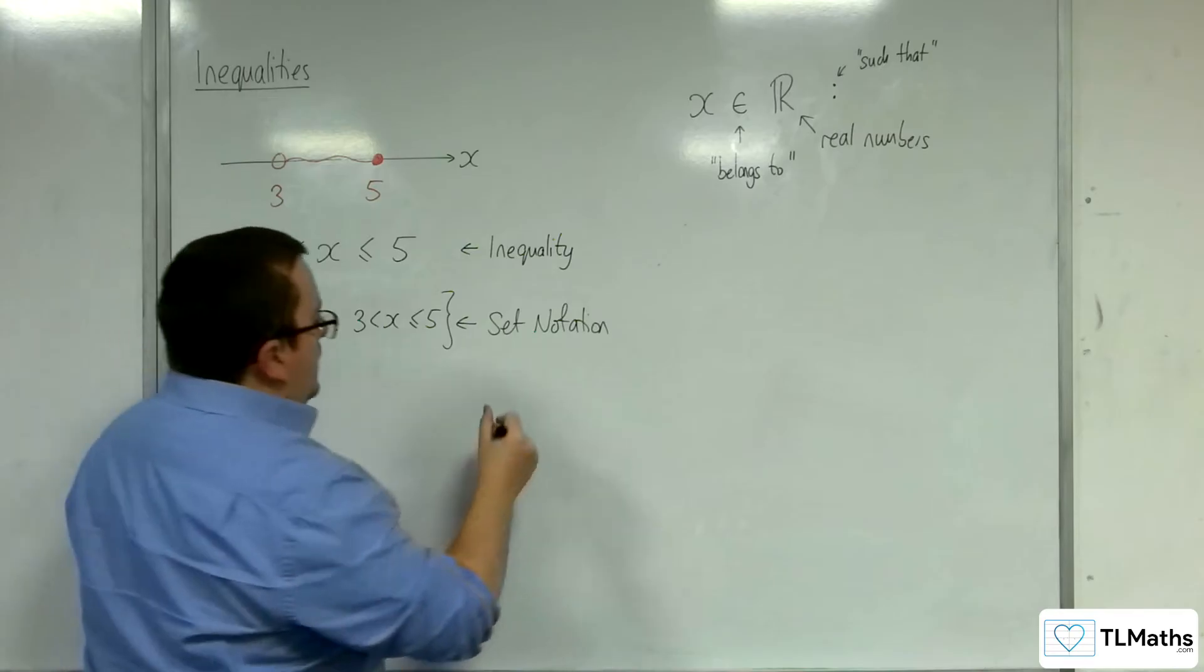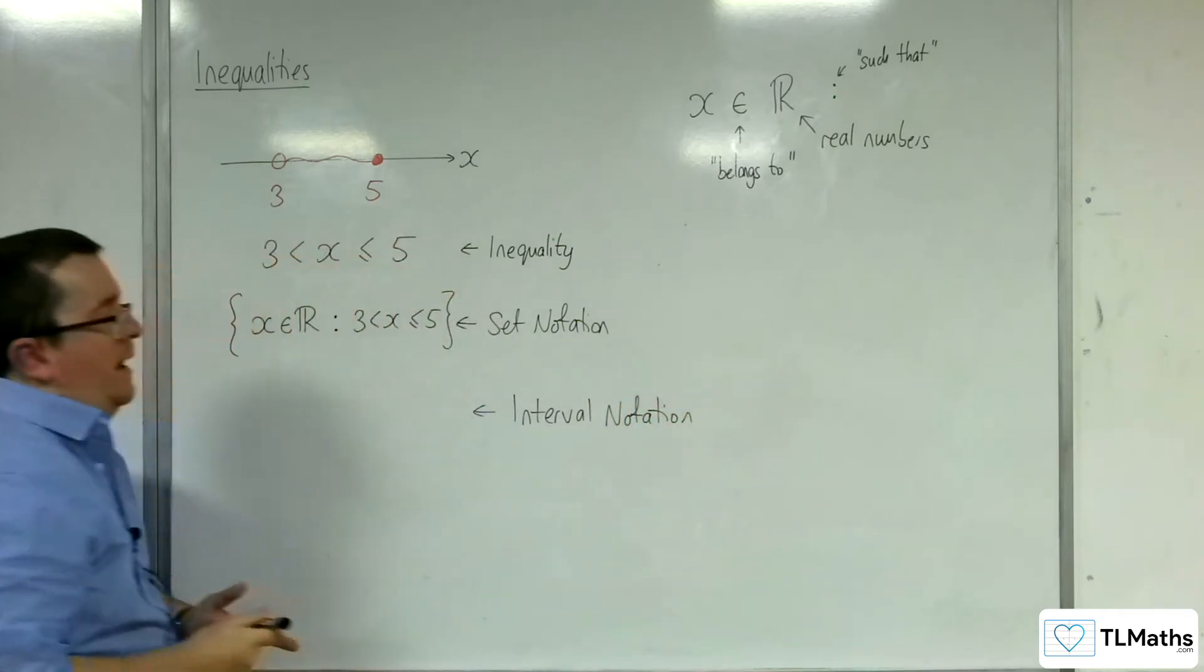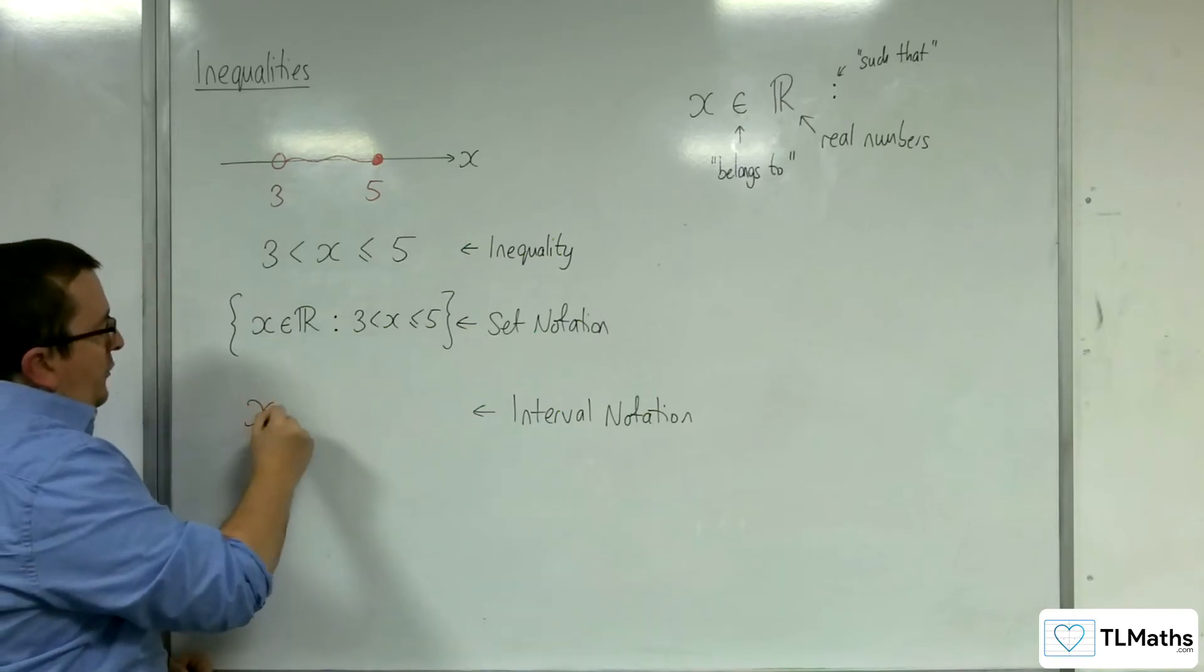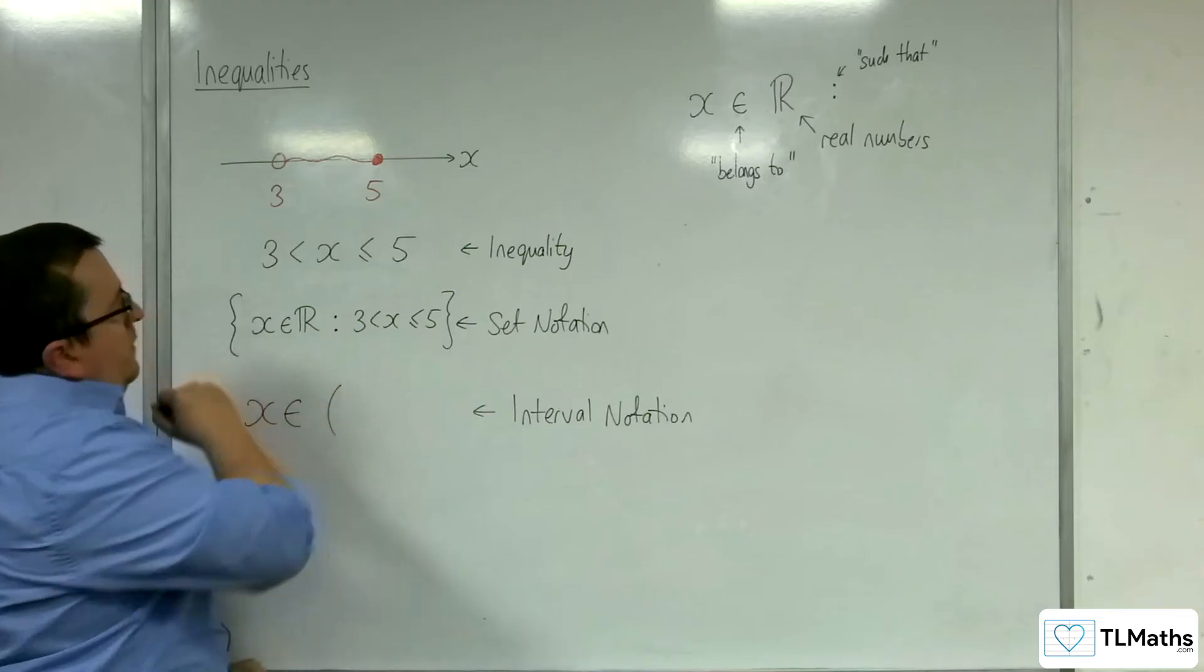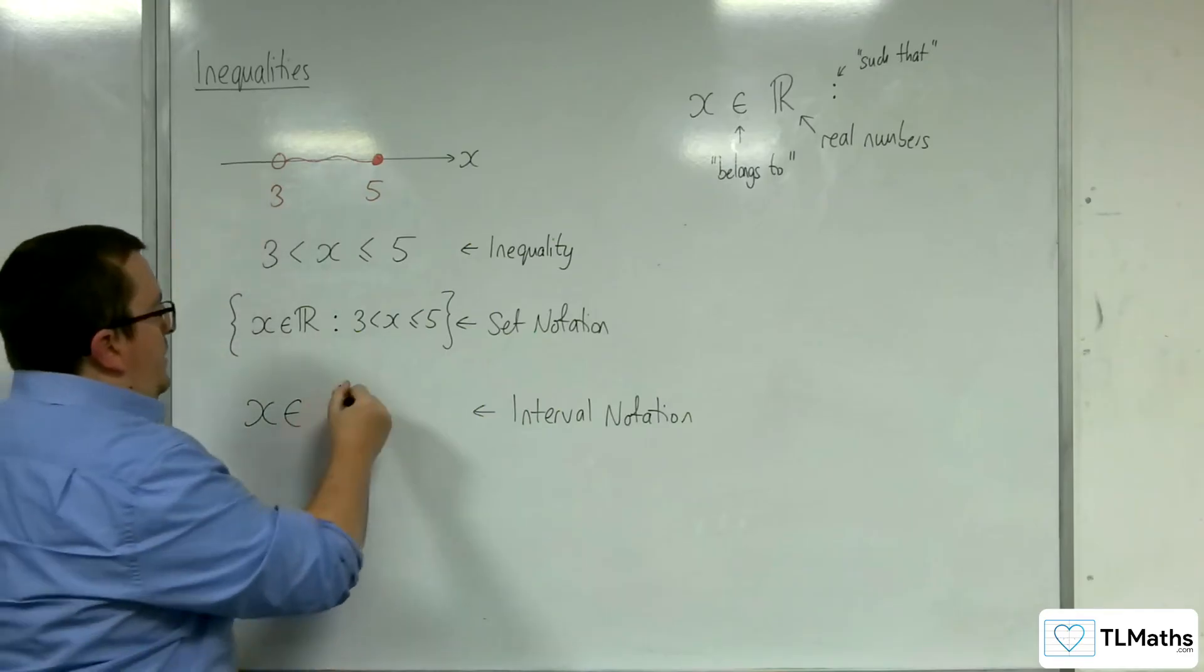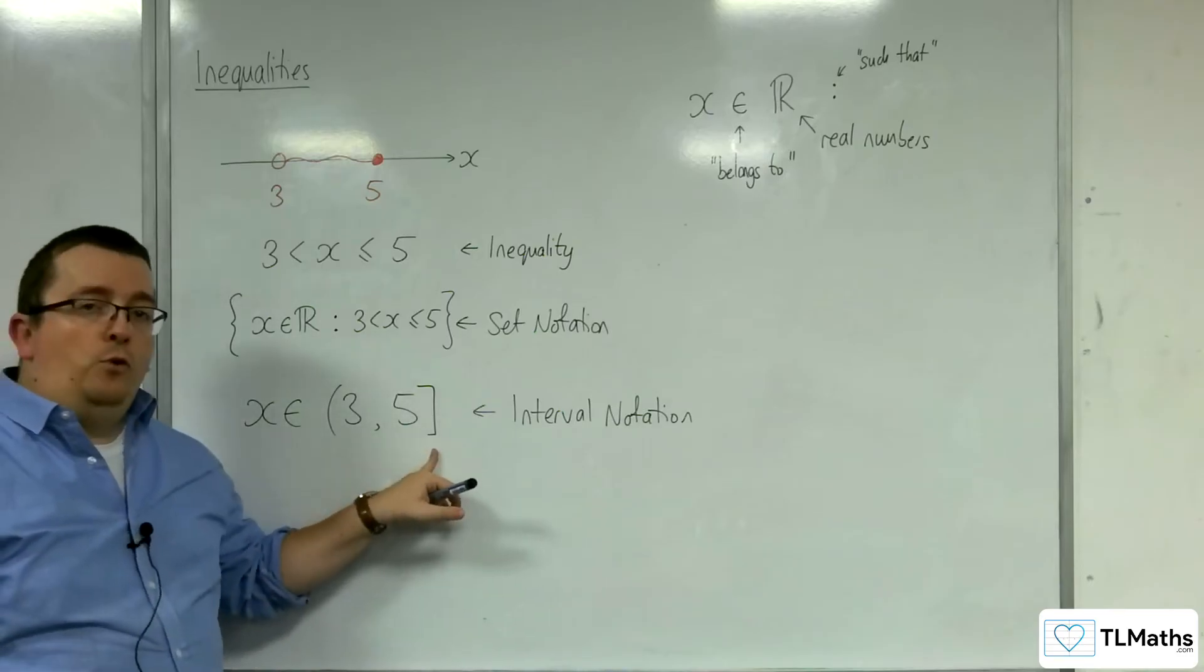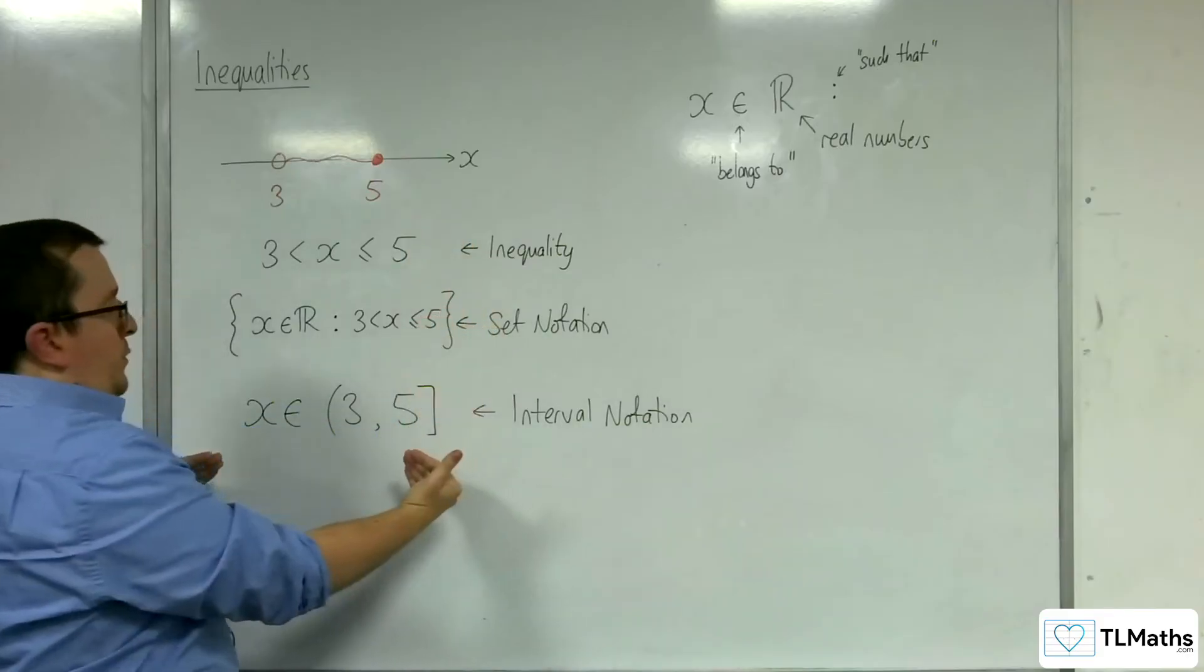Now, the third type is interval notation. The exam board that focuses more on interval notation than any other is AQA. The way interval notation works is that you say, x belongs to, so this is an identical notation of what we have here. And then we open up a curved bracket when the value is not included. So 3 is not included, so that goes in a curved bracket. But 5 is included, and that is then going in a square bracket. We use a curved bracket for not included, and a square bracket for is included. So then you have your inequality, set notation, and interval notation.